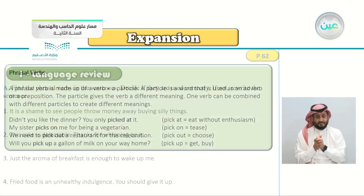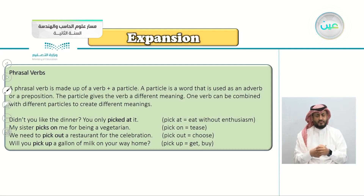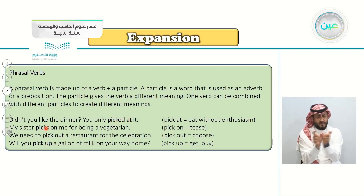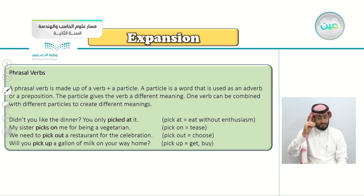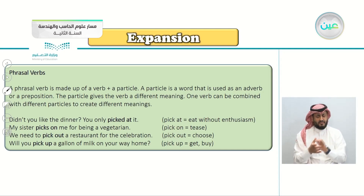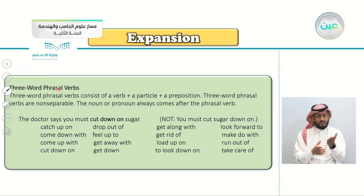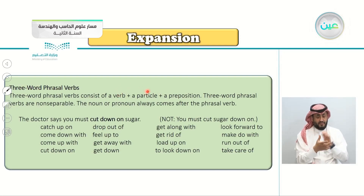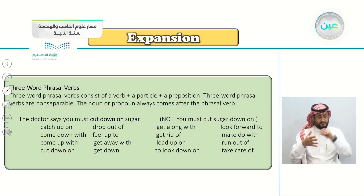This is about phrasal verbs. If you remember from unit two, a phrasal verb is made of a verb plus a particle — just like 'picked at' or 'picked on.' A particle is a word used as an adverb or a preposition, and it gives the verb a different meaning. For example: 'pick at' means eat without enthusiasm; 'pick out' means choose; 'pick up' means to get by. There are also three-word phrasal verbs, which consist of a verb plus a particle plus a preposition. Three-word phrasal verbs are non-separable — the noun or pronoun always comes after the phrasal verb.